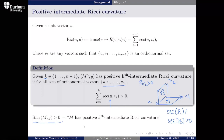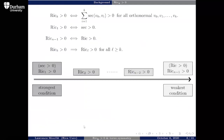The notation is that Ric_K is positive when we have positive K-th intermediate Ricci curvature. Notice that if K equals 1, then sectional curvatures are all positive. If K equals n minus 1, this is just positive Ricci curvature. And if Ric_K is positive, then for any L greater than or equal to K, Ric_L will also be positive. So sectional curvature is our strongest condition and Ricci curvature is our weakest.